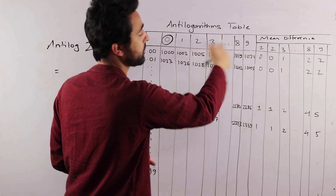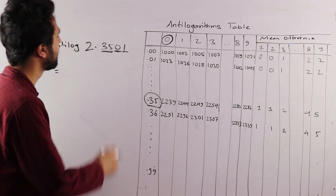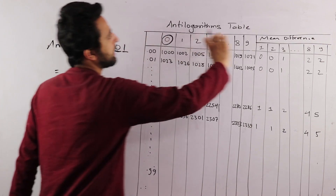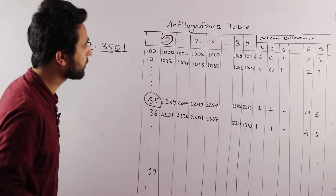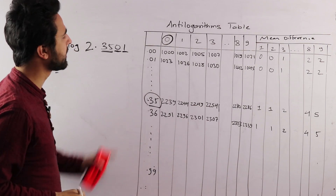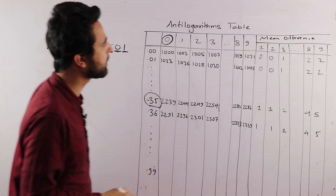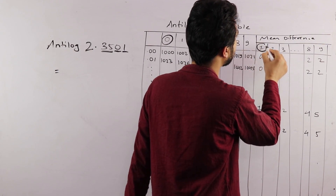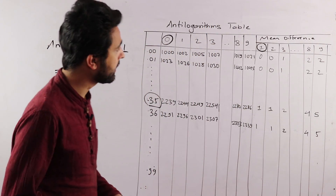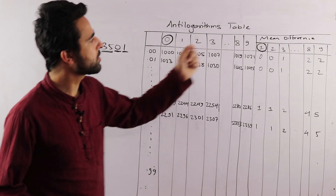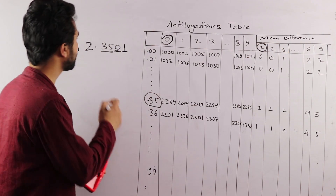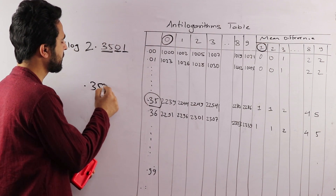So the table value is 0.35. The table is 0.35 and the first column is 0. The last digit is 1. So the main difference for 0.35 is 0.